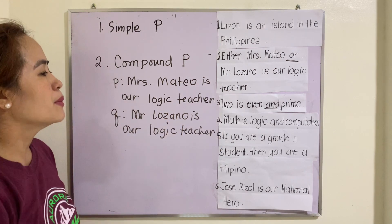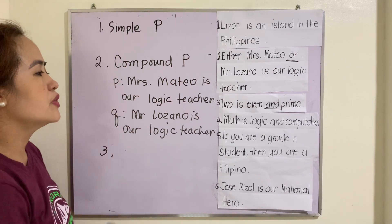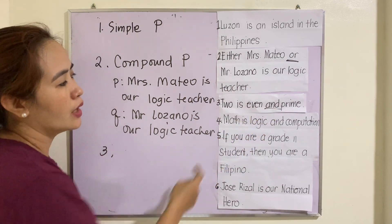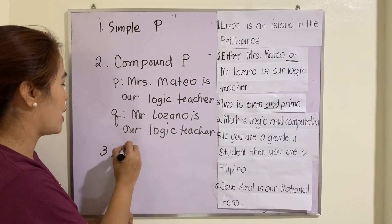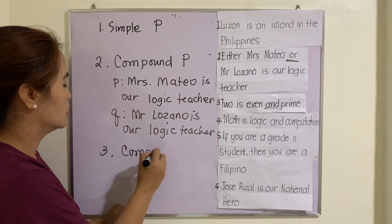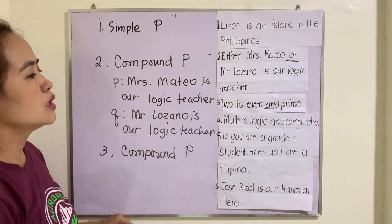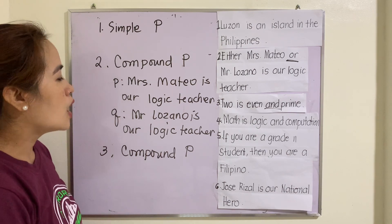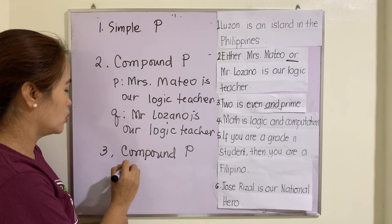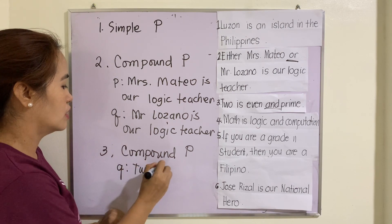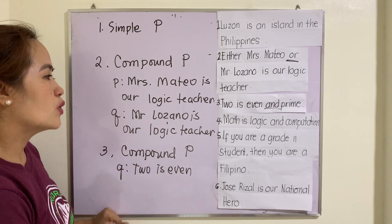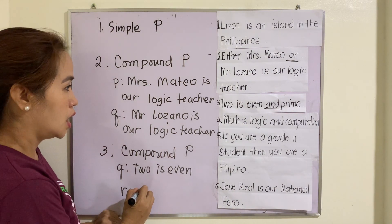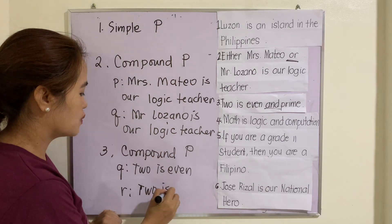Number three: 'Two is even and prime.' We use the connector 'and', therefore this one is a compound proposition. The two sub-propositional variables are: q - 'Two is even', and r - 'Two is prime.'